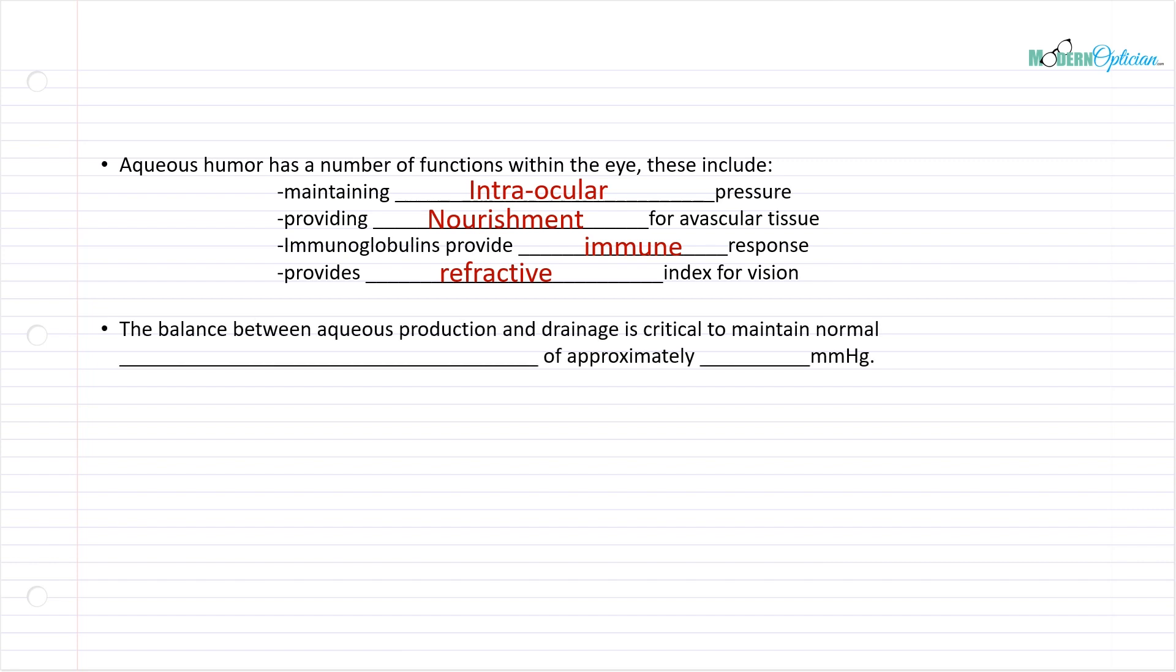So the balance between aqueous production and drainage is critical to maintain normal intraocular pressure. We short form that with IOP, and normal intraocular pressure is approximately 18 to 20 millimeters of mercury. That pressure measurement is extremely important to understand. Now, normal intraocular pressure is different for every patient. Not everybody's going to fall within 18 and 20. There's different benchmarks for everybody. But it's very important to understand that in order to maintain whatever that number is for that person, the normal number, there has to be proper production and proper drainage.